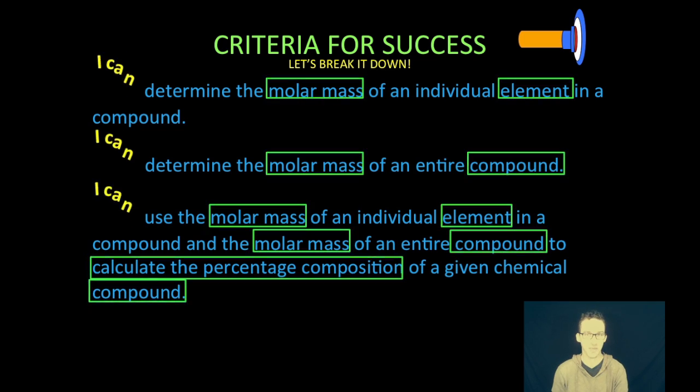We are first going to determine the molar mass of an individual element in a compound. Two, determine the molar mass of the entire compound. And then three, use those molar masses of the individual elements in the compound and the molar mass of the whole compound to calculate the percent composition of a given compound.